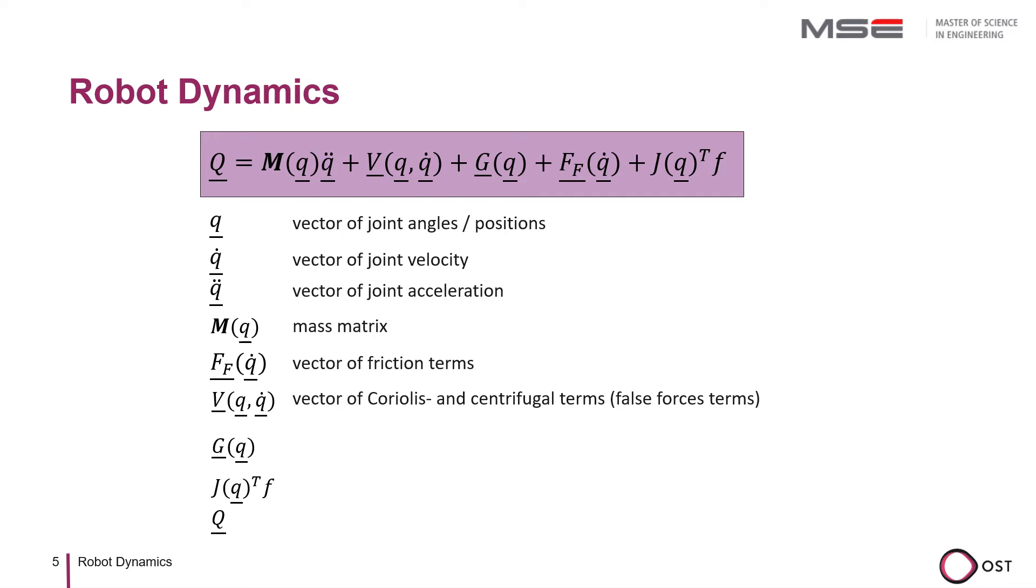For example, if a robot rotates very fast around its z axis, the arm is pulled outwards by the centrifugal force, the false force according to d'Alembert, and applies a torque to the elbow joint.